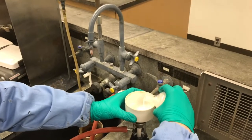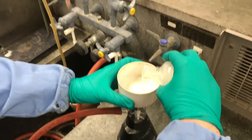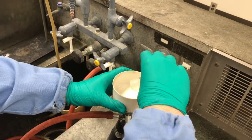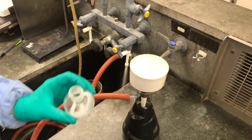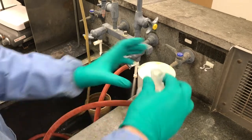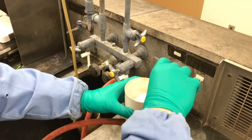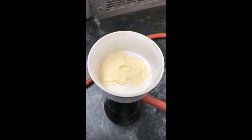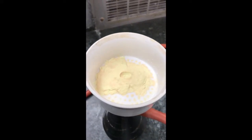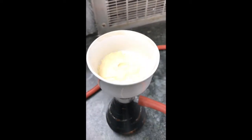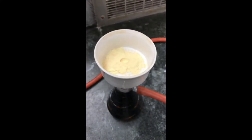The workup for this reaction is pretty straightforward. All we're doing is just filtering our reaction mixture. And we're washing with cold water. So here we have some cold water. We're just going to rinse out the rest of the reaction mixture. And then we're going to filter it. And here's a close-up of what that product looks like for the elevated temperature reaction. It's slightly yellow in color. And it's a solid.